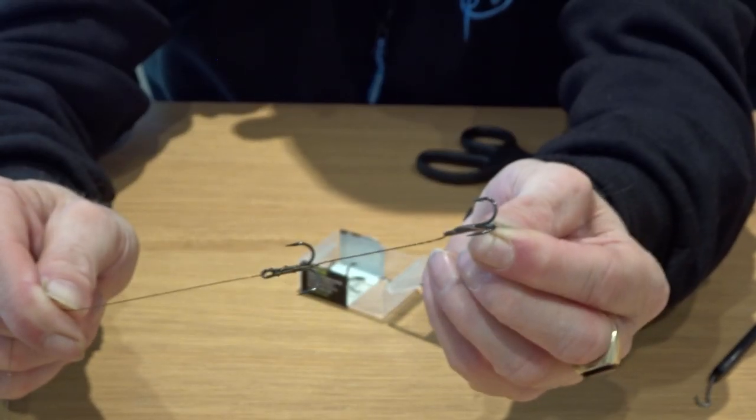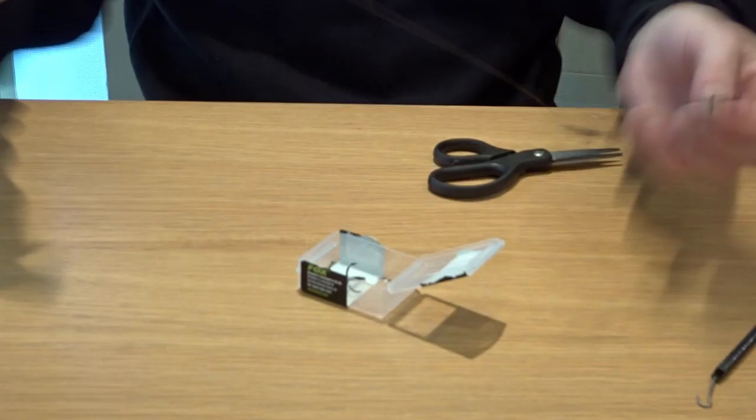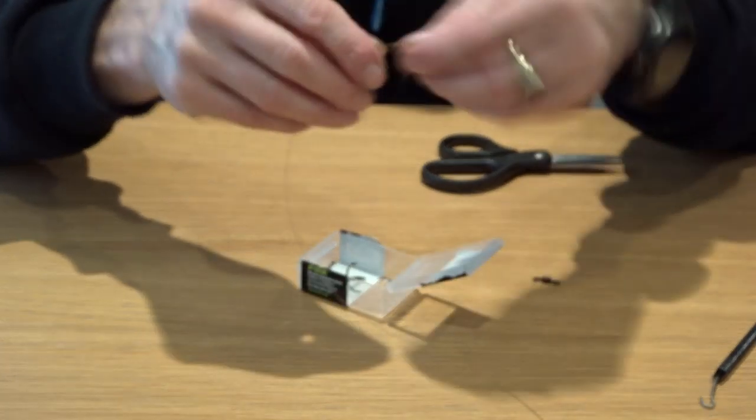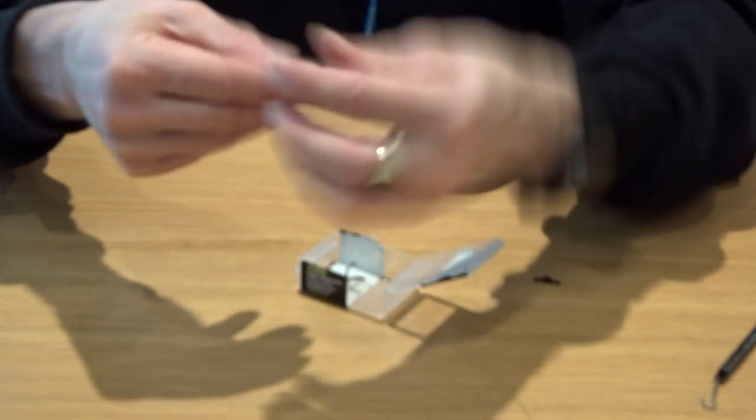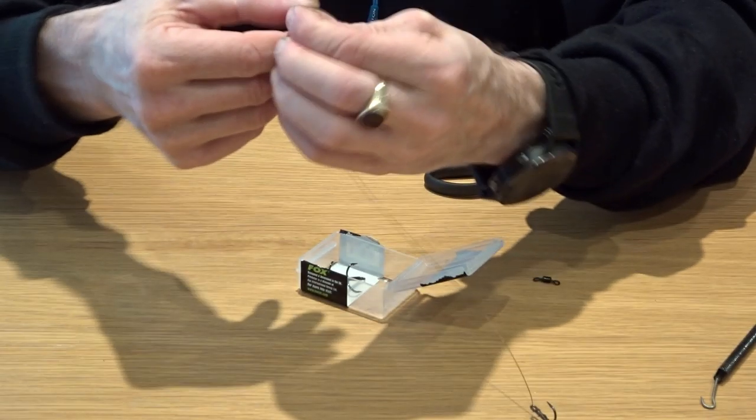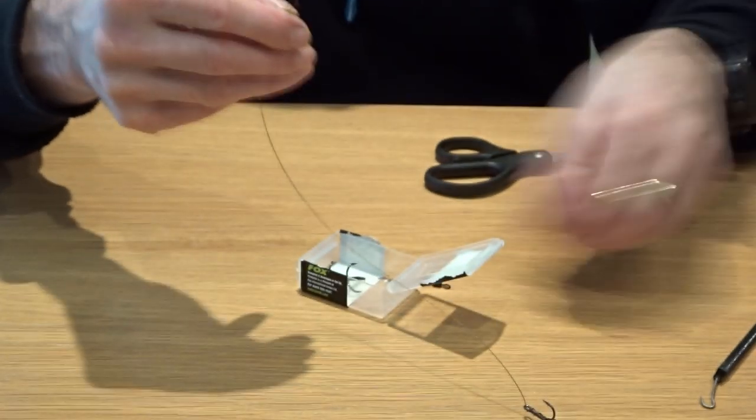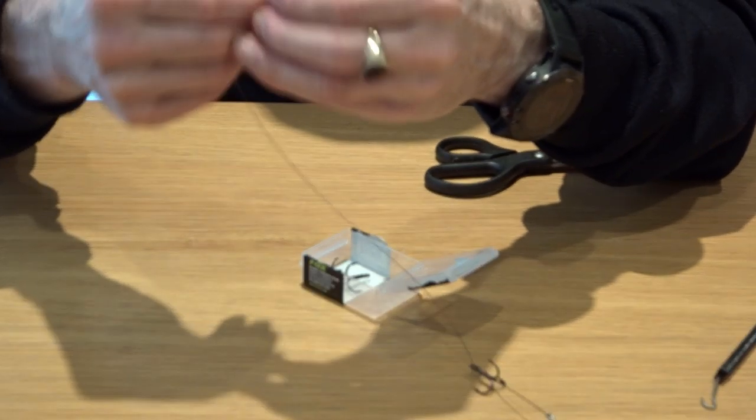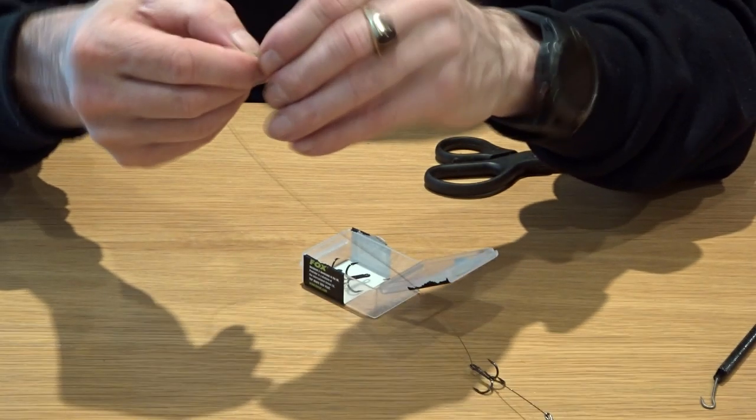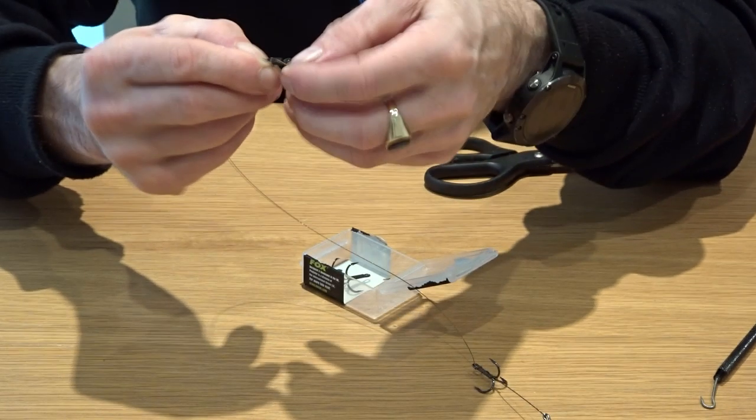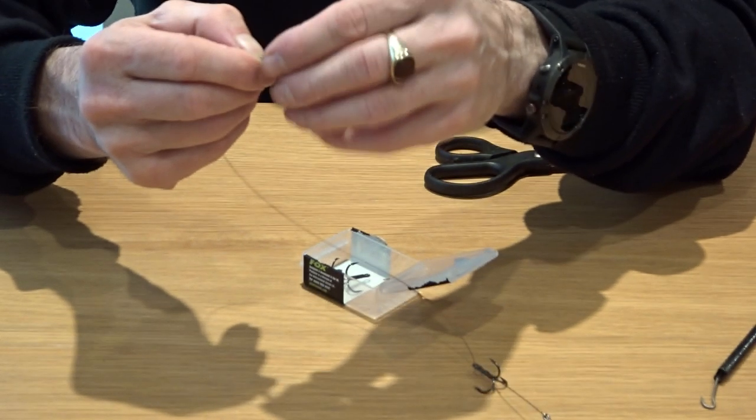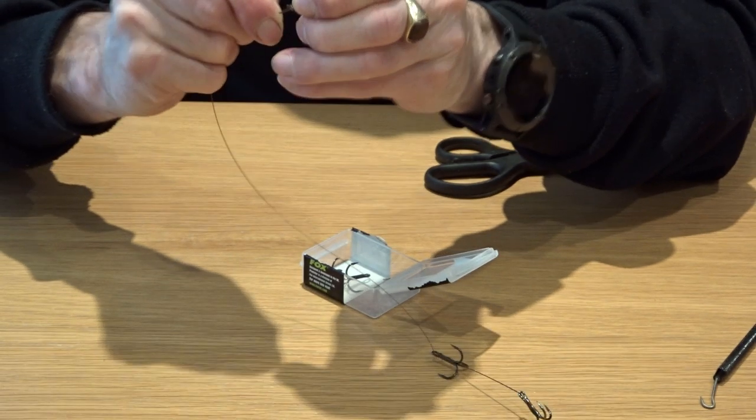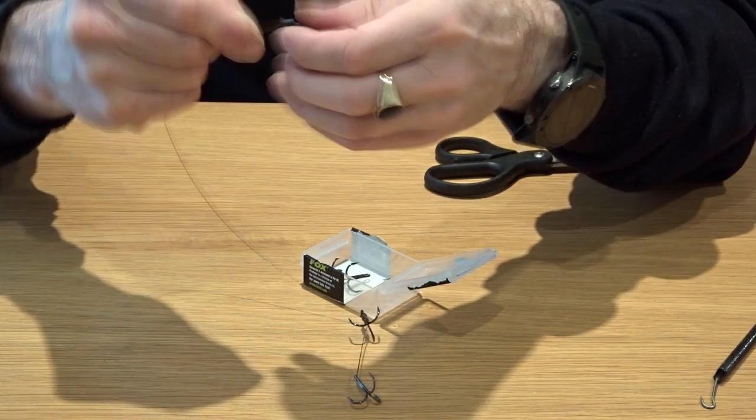So that in essence forms the basis of our pike trace. All we need to do now is put a swivel on in the exact same manner that we did the first treble. Again, if you wanted to heat shrink this connection, then put a piece of heat shrink on now before you slide the treble on. So we've folded the wire over, I've come through the first eye, popping that over the back of that swivel. Get yourself some good quality size 8 barrel swivels, and then pulled it back through.